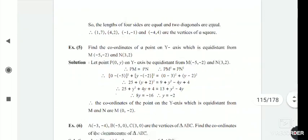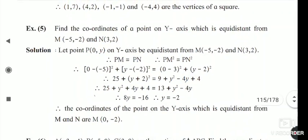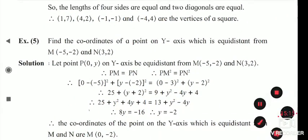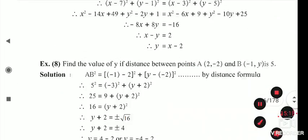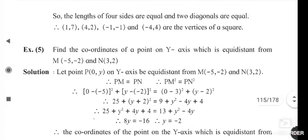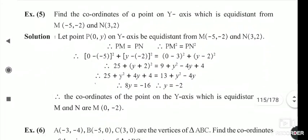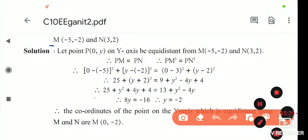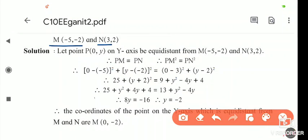The next question: Find the coordinates of the point on the y-axis which is equidistant from M(-5, -2) and N(3, 2). Since the point lies on the y-axis, its x-coordinate is zero. Let the point be P(0, y). We need to find y such that PM = PN.